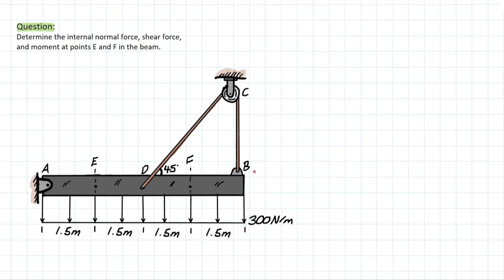The first thing we need to do for any internal force problem is determine our reactions. We know from the problem that we're going to be looking for E and F's internal forces. We have a reaction AX and a reaction AY for the pin, and then we also have other reactions created in this pulley's rope — two tensile forces. We know from our machines problem that the force within the pulley's rope is going to be consistent throughout the entire length of it.